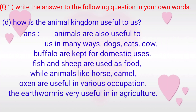D. How is the animal kingdom useful to us? Answer: Animals are also useful to us in many ways. Dogs, cats, cows, and buffalo are kept for domestic uses. Fish and sheep are used as food, while animals like horse, camel, and oxen are useful in various occupations. The earthworm is very useful in agriculture.